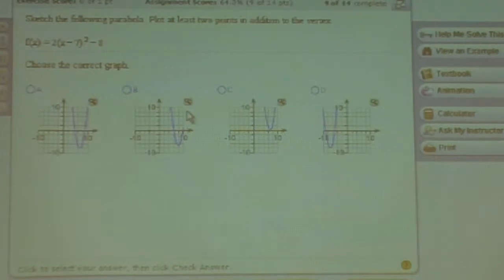So now let's talk about the vertex. Remember, the vertex is located at the coordinates h, comma k. If we change the sign on h, it'll become positive 7.